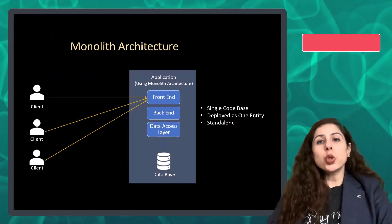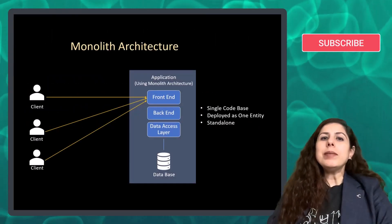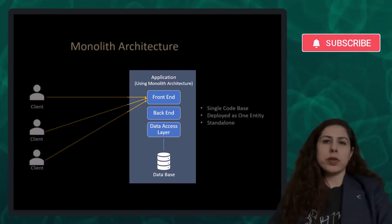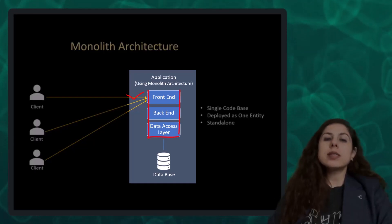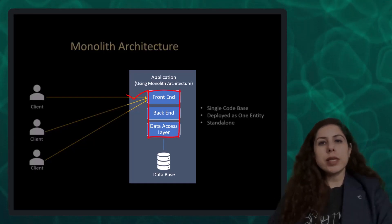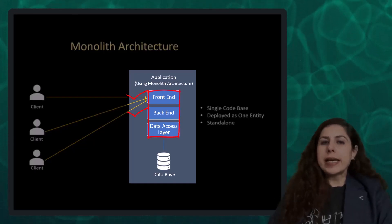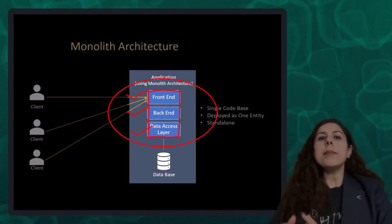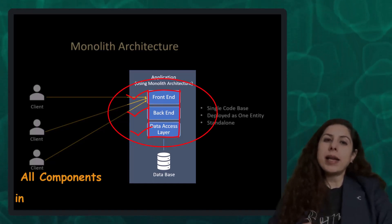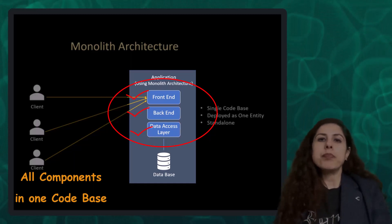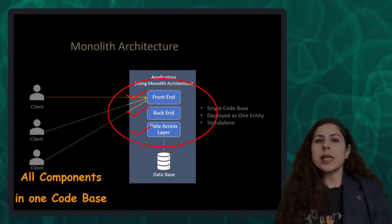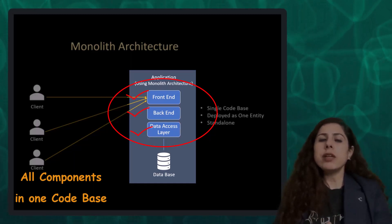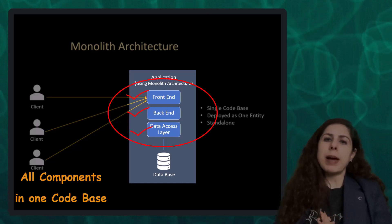What is monolithic architecture? In monolithic architecture, all components of software architecture such as user interface, business logic, data access code, and database operations are mingled and managed as a single code base. This architecture is simple and straightforward, especially for small-scale applications.